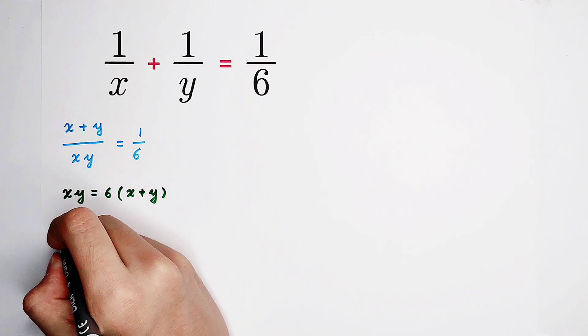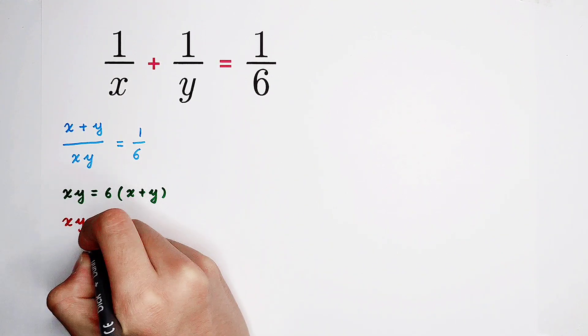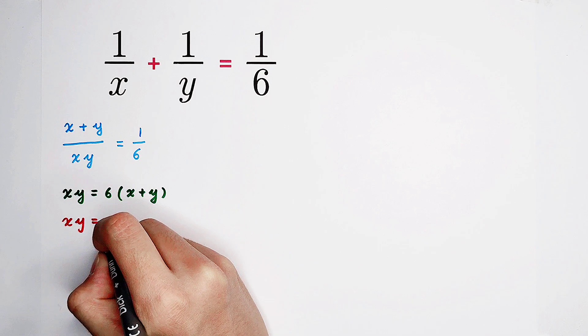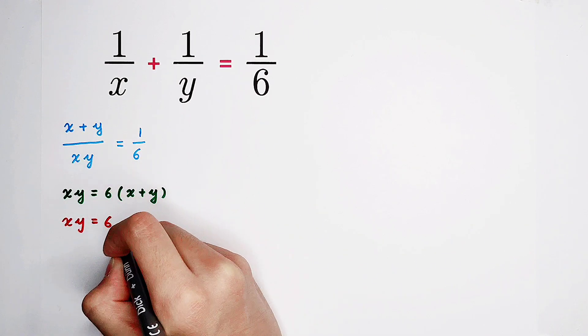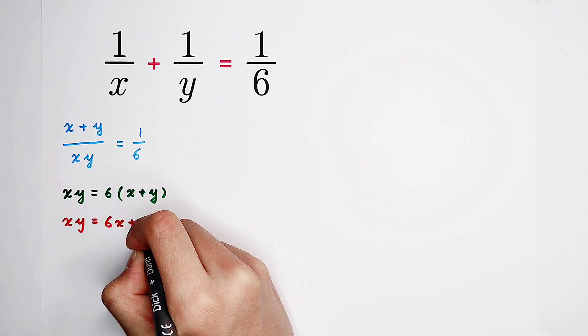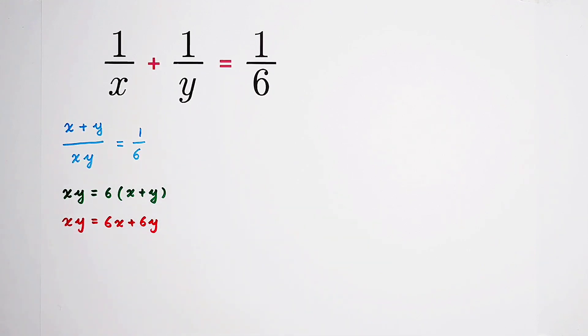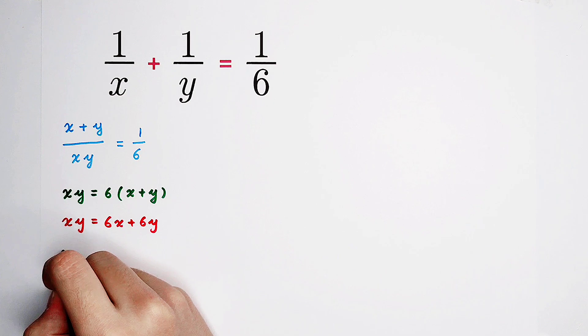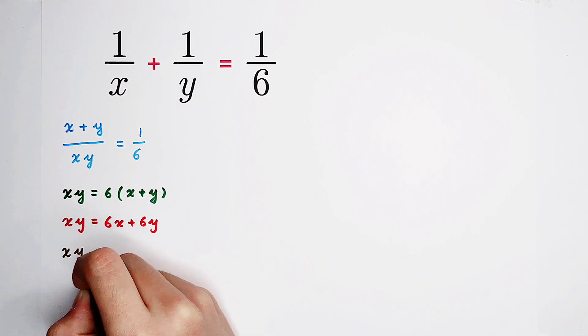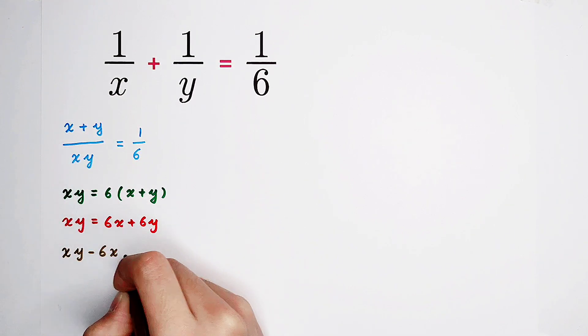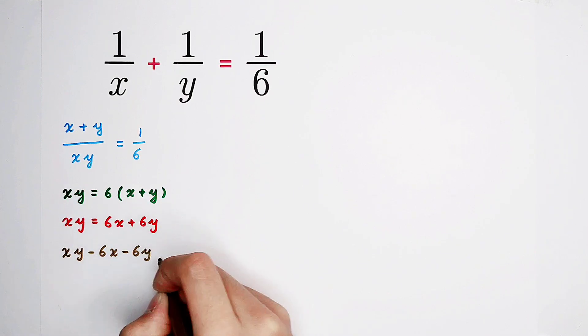Then, the left-hand side is xy, and the right-hand side simplify it is 6 times x plus 6 times y. Then, I like to subtract the right-hand side from both-hand sides. xy minus 6x minus 6y is 0. Very good.